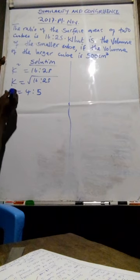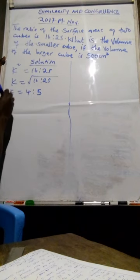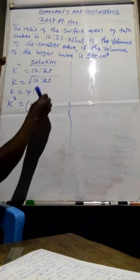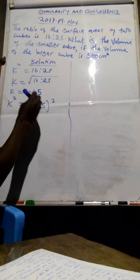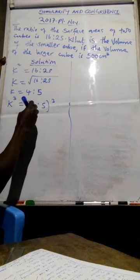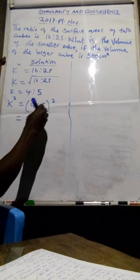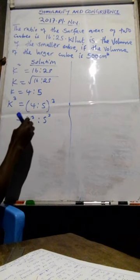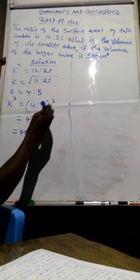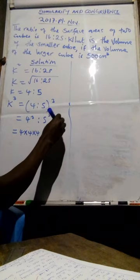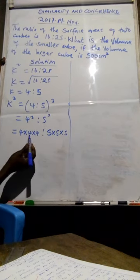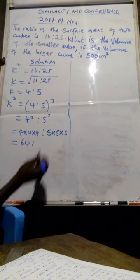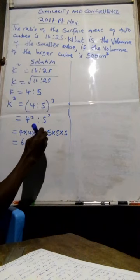From there now, that's when you can convert from here to volume scale factor. Now volume scale factor will be K power 3 equals 4 to 5 all power 3, which will be 4 power 3 to 5 power 3. 4 power 3 means you multiply 4 itself 4 times to be 4 times 4 times 4, the same applies even 5 means 5 times 5 times 5. From there, 4 times 4 is 16, then 16 times 4, and now it will be 16 times 4. From there, 5 times 5 is 25 times 5 it will be 125.